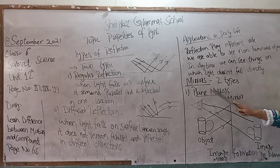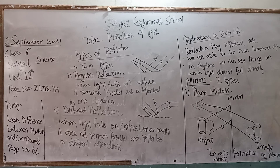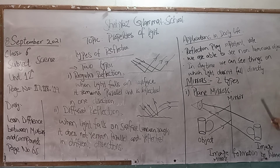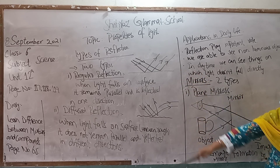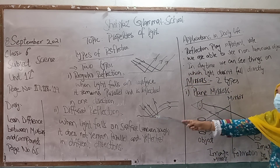Now we have mirrors. There are two types of mirrors: one is a plane mirror and the other is a spherical mirror. Today we are going to study plane mirrors. Plane mirrors have a smooth surface and produce regular reflection. When light rays fall on the surface, they reflect back in one orderly manner, not in different directions like diffuse reflection.